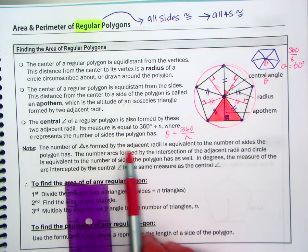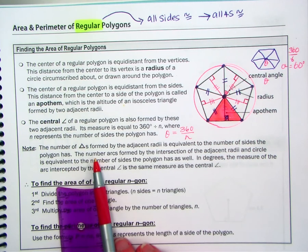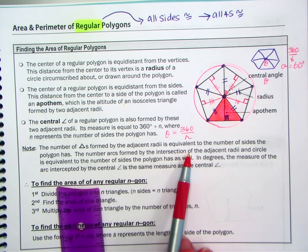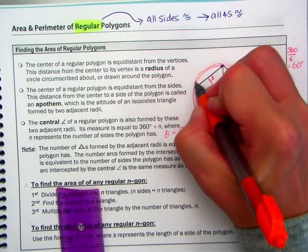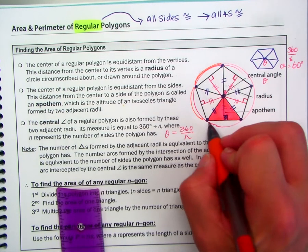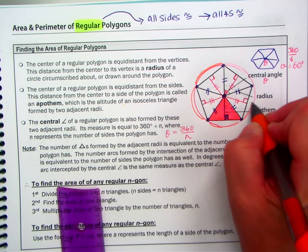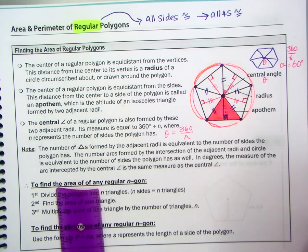The number of triangles formed by the adjacent radii is equivalent to the number of sides. We mentioned that. The number of arcs formed by the intersection. So an arc is part of the circle. So this arc right here, we have one, two, three, four, five arcs, because we have a pentagon that forms the whole circle.